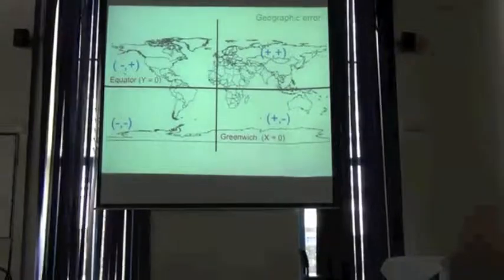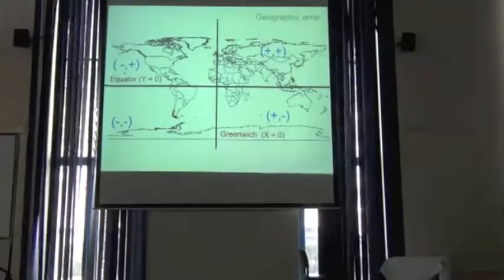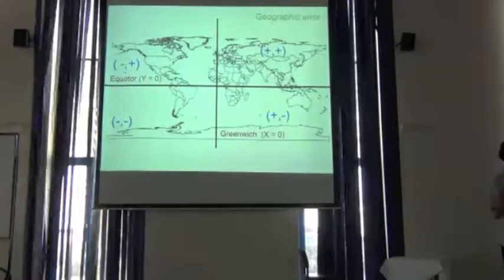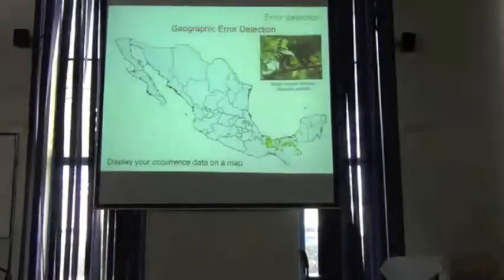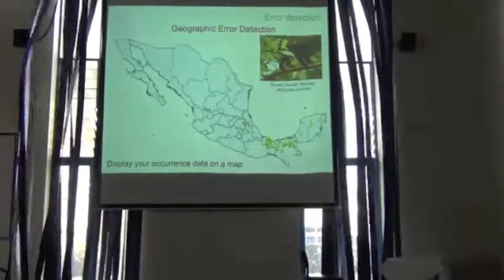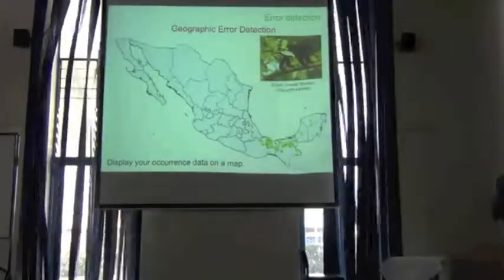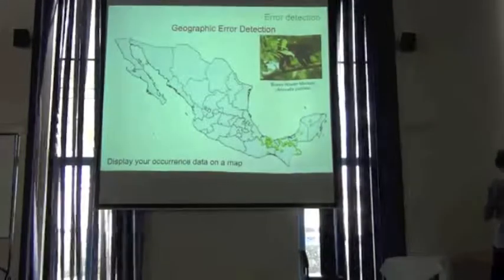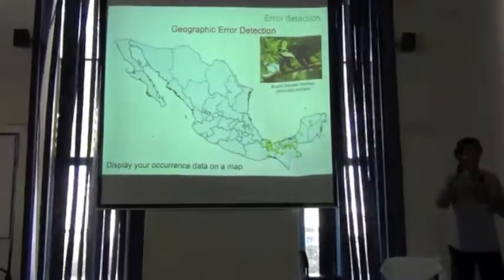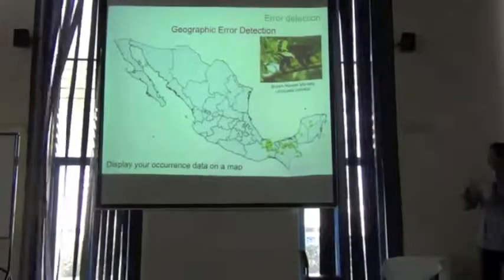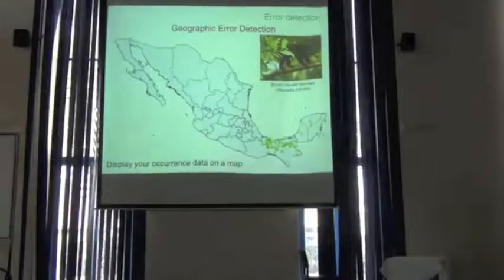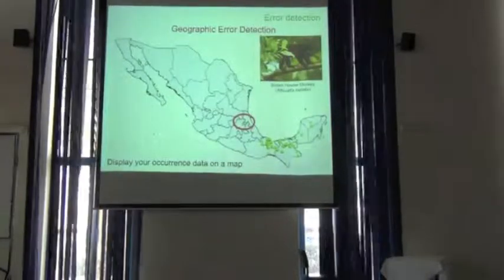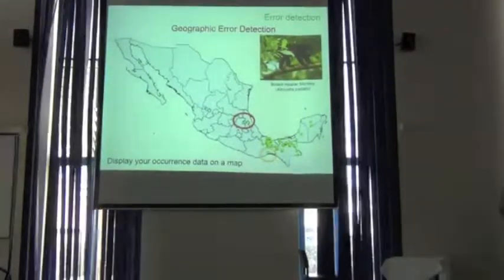If you have a locality very near to the meridian or to the equator, it's very easy to make mistakes. So it's very important that you check your locality. The very first thing you should do is to plot your localities in a map, to display them, and in that way you will see records that look weird and probably deserve to be double-checked.